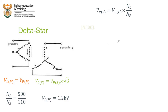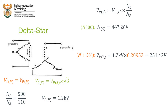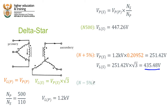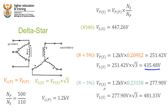For delta-star: at the 500 V tapping we get 457.26 V as before. At the plus 5% tapping, secondary phase voltage is 1.2 kV × 0.20952 = 251.42 V; multiplying by √3 gives a line voltage of 435.48 V. At the minus 5% tapping, using ratio 0.23158, the phase voltage is 277.90 V, and multiplying by √3 gives a line voltage of 481.33 V — the highest voltage achievable across all configurations and tappings.